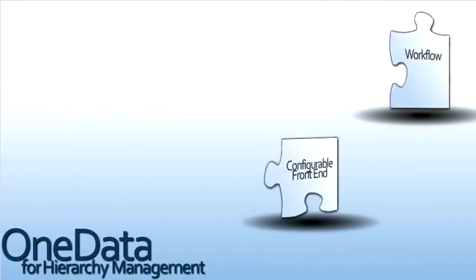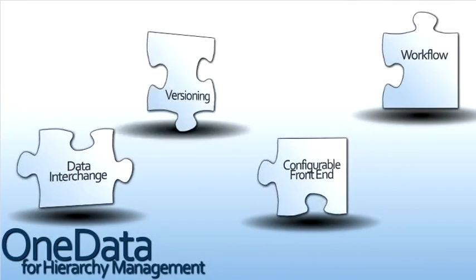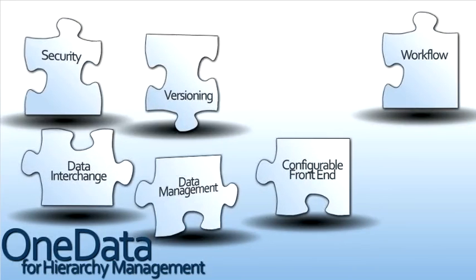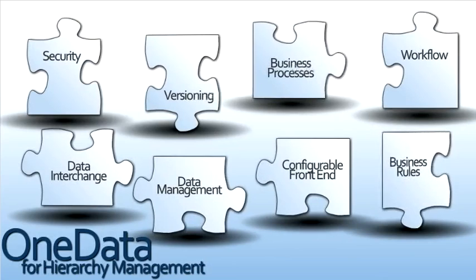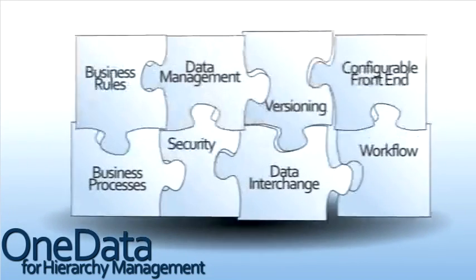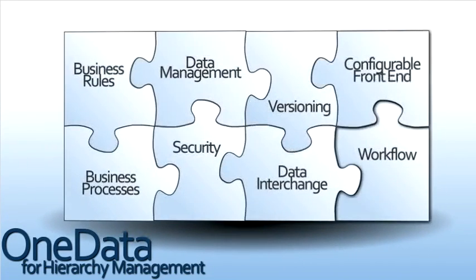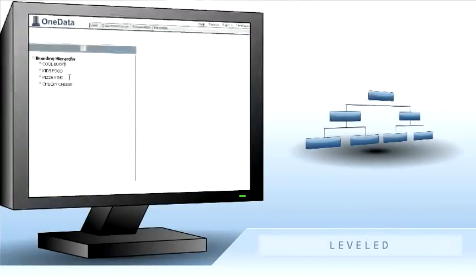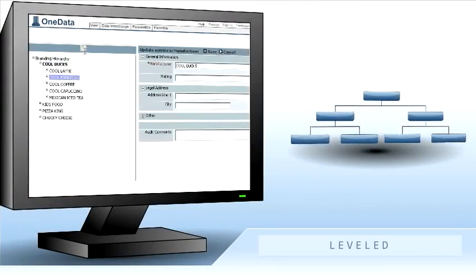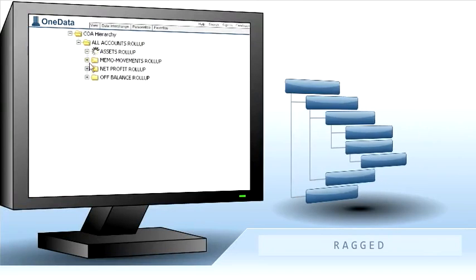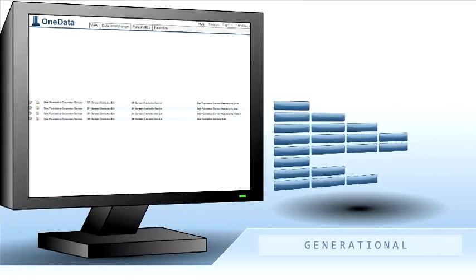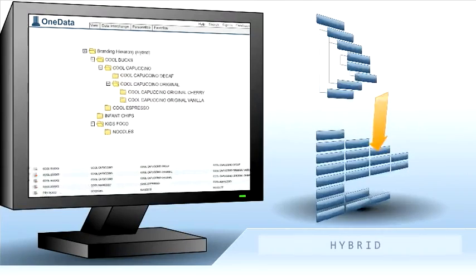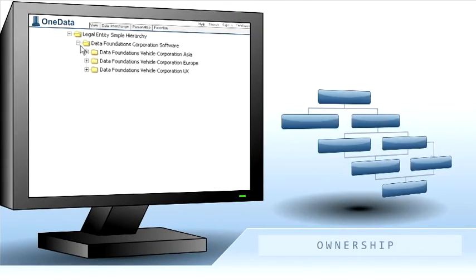One Data for hierarchy management is a powerful yet easy-to-use tool that provides the strength and flexibility you need right out of the box — to create and manage hierarchies of any kind, of any complexity: leveled hierarchies, ragged hierarchies, and generational views for ragged hybrid ownership hierarchies.